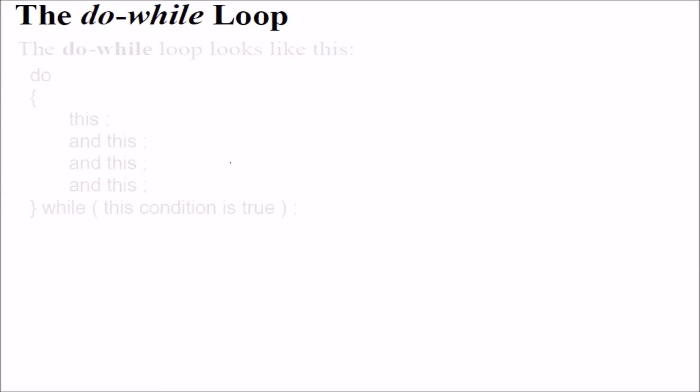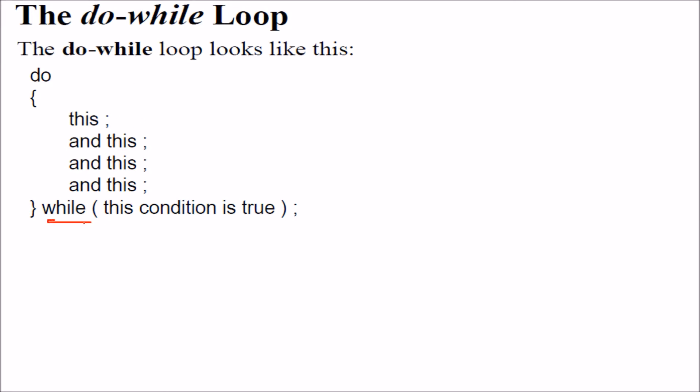Now, do while loop. The do while loop is an exit control loop, meaning the condition is checked here, not here. So you enter here even if the condition is false for the first time, and you execute these instructions at least once.